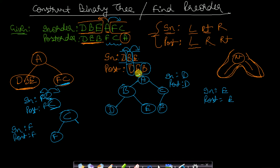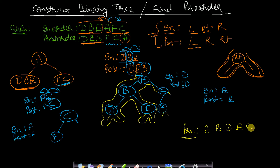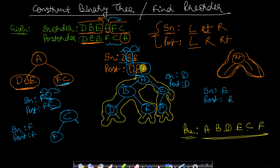In pre-order, when we first reach a node we print it. We start from root A — print A. Go to B — print B. Go to D — print D. D has no children. Back to B, go to E — print E. E has no children. Back to A, go to C — print C. Go to F — print F. F has no children, right side of C is null. So the pre-order traversal is: A, B, D, E, C, F.